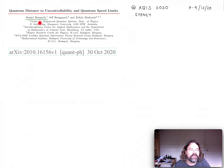I am Burgaard from Macquarie University and I would like to speak about some collaborative work with Jeff Borgaard and Zoltan Zimborash. The title of the talk is Quantum Distance to Uncontrollability and Quantum Speed Limits.